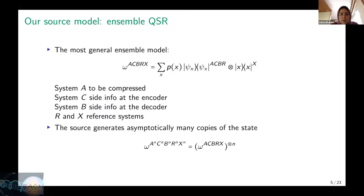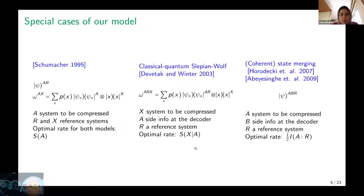The source model we consider is the ensemble generalization of quantum state redistribution. We consider an ensemble source where system A is the system to be compressed, C is the side information of the encoder, B is the side information of the decoder, and systems R and X play the role of the reference system. Similar to Schumacher, we consider many copies of the source. Before moving to results, I would like to mention all the special cases of this general system model that have already been solved in the literature.